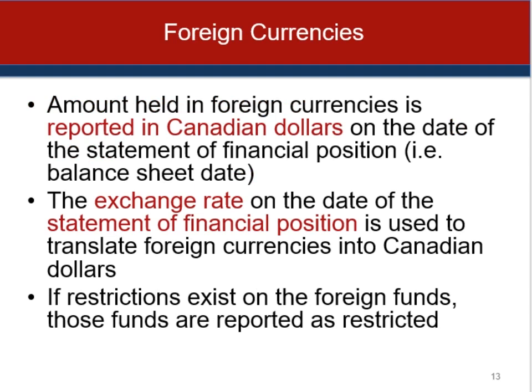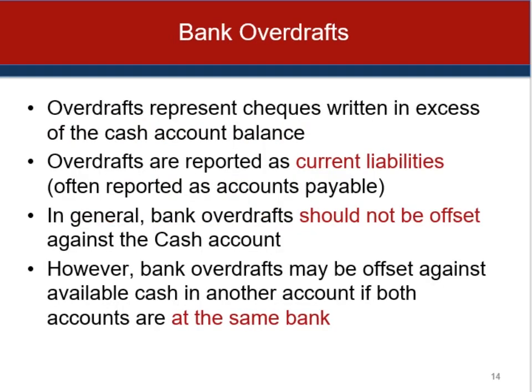Issues of foreign currencies are often quite complex and are dealt with in detail in the advanced financial accounting course. For our purposes, financial statements are disclosed in Canadian dollars for the most part, so foreign currencies would be translated to Canadian dollars at the date of the presentation of the financial statements. Bank overdrafts occur when a check is written for more than the amount in the cash account. Bank overdrafts should be accounted for as a current liability and, if material, separately disclosed. They shouldn't be simply offset against the cash account because they represent two different items — a financial asset and a financial obligation.